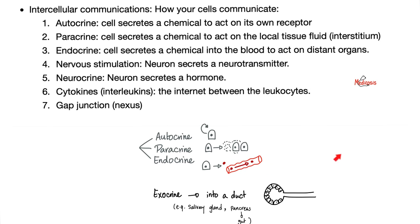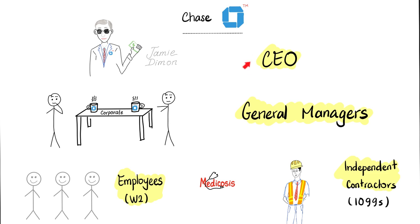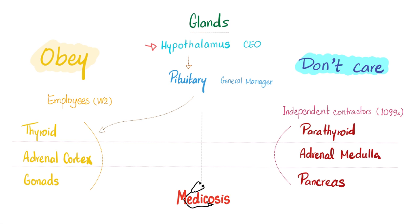The bloodstream takes it to distant places. Think of it like a CEO, general manager, employees, and independent contractors — that's hypothalamus, pituitary, glands that listen to the anterior pituitary, and glands that don't care.